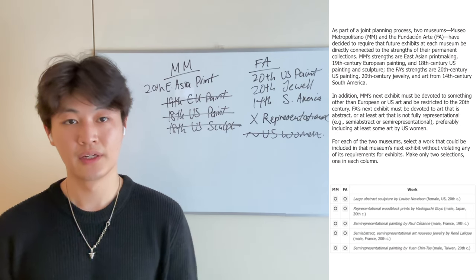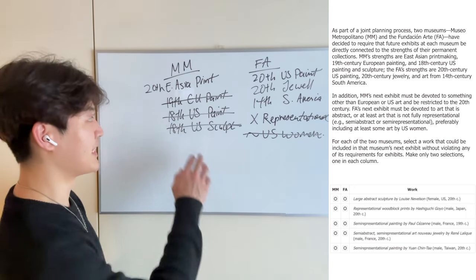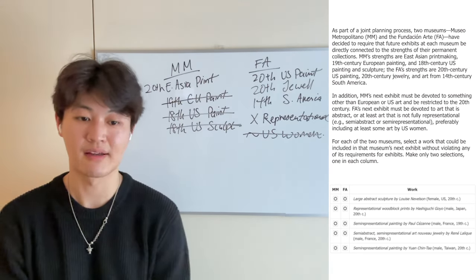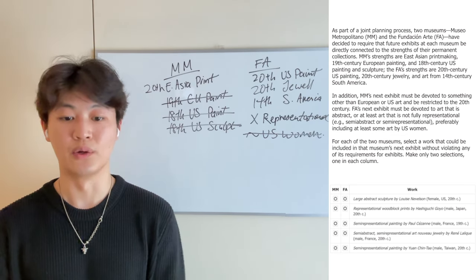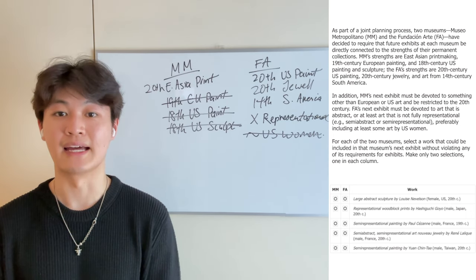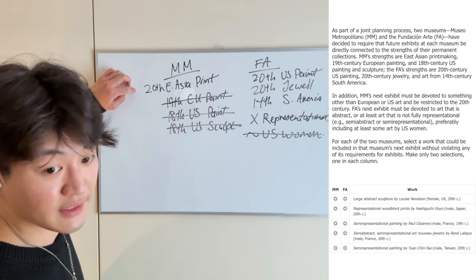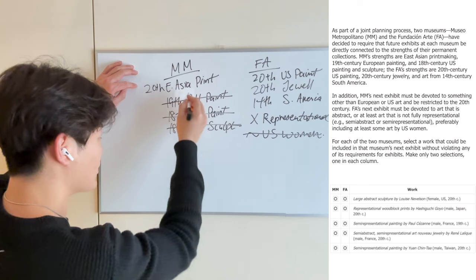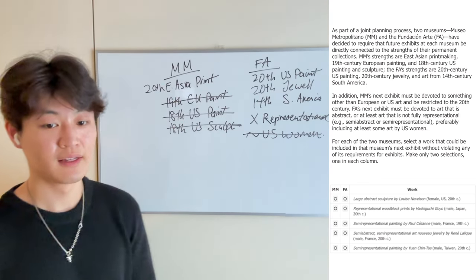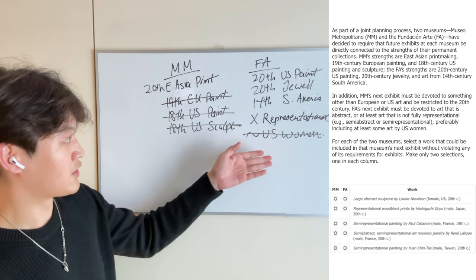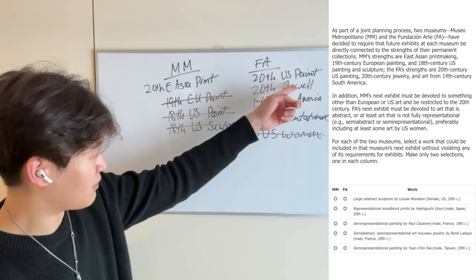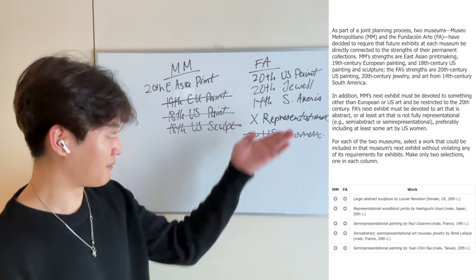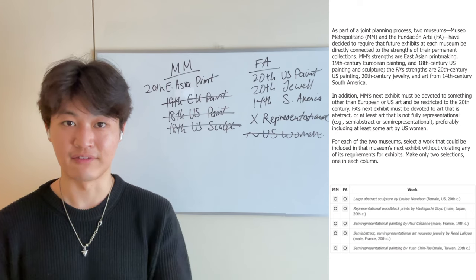Make two selections, one for each column. Let's go through these one by one. First: a large abstract sculpture by a female artist from the United States in the 20th century. For MM, we need East Asians — this person is from the United States, so the first work cannot be MM. For FA, it seems to be a large abstract sculpture — that's not representational, which is a plus. But FA does not do sculptures, or at least sculptures from the 20th century. So the first work violates both requirements.